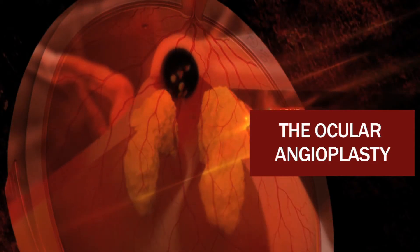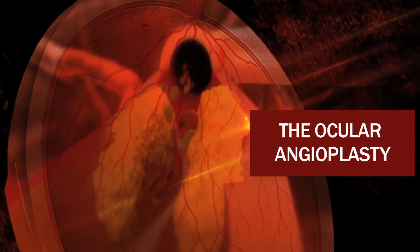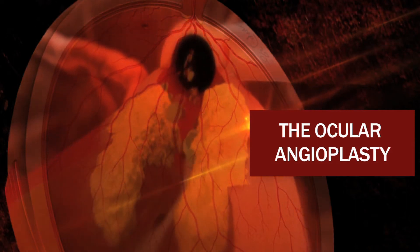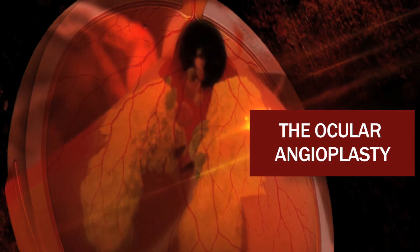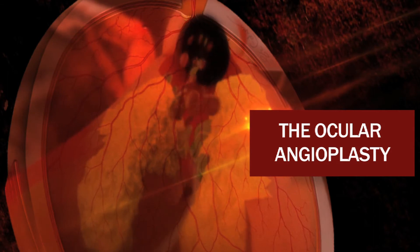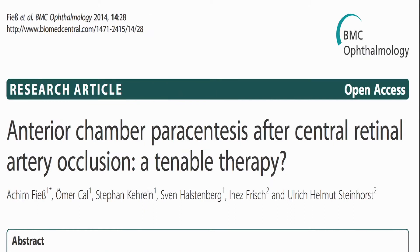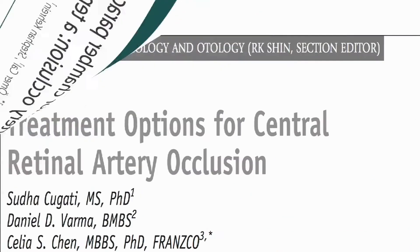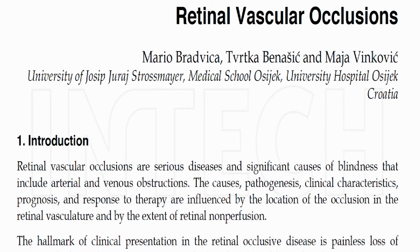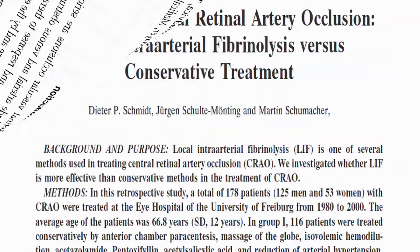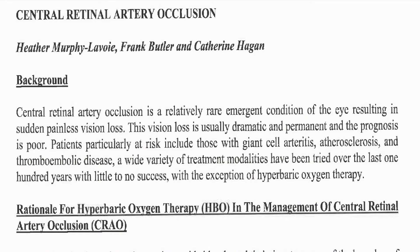Central retinal artery occlusion is an ocular emergency and is the ocular analogue of a cardiovascular stroke. It results in profound, usually monocular vision loss and is associated with significant functional morbidity. Hence, methods like ocular massage with paracentesis and pharmacological therapies are tried. Studies have however shown that these methods do not show significant amelioration for most patients, and the same was the case with this patient.